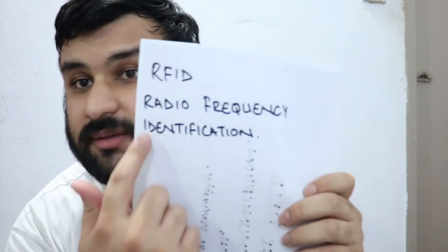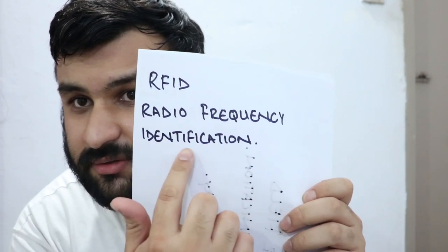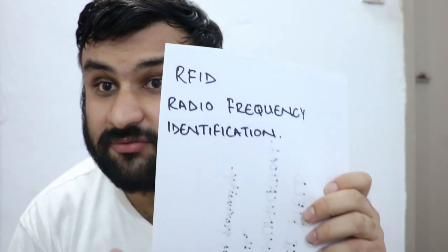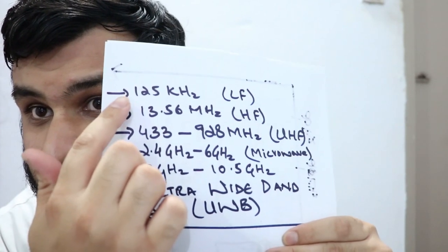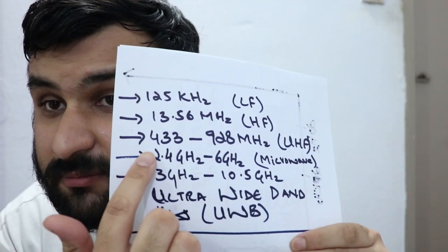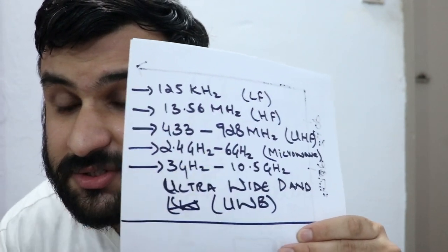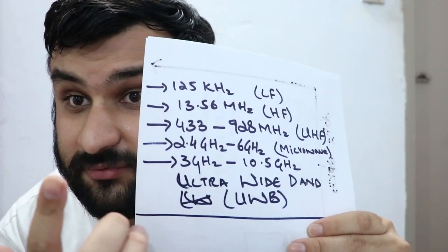We'll talk about the theory about RFID and NFC and how that works and how safe it is. First of all, RFID: RF stands for Radio Frequency, ID stands for Identification. The frequencies it uses are 125 kilohertz for LF, 13.56 megahertz for HF, and the ultra high frequency range is 433 megahertz to 928 megahertz. It's not mostly used, but it is there.